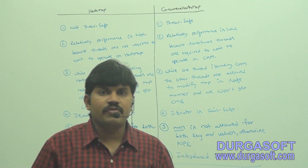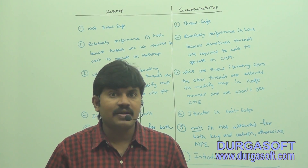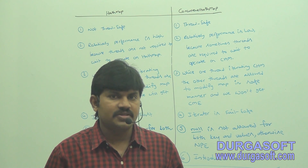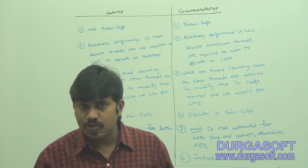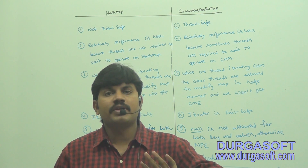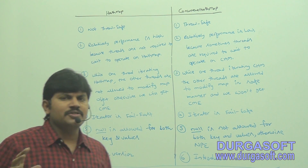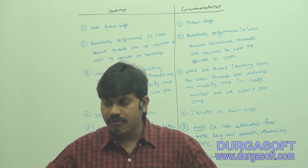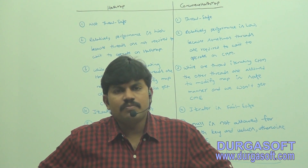An important question for the interview room: what is the difference between HashMap and ConcurrentHashMap? Normal collection versus concurrent collection — what is the difference functionality-wise? Our previous knowledge is more than enough to cover this difference. Very simple.